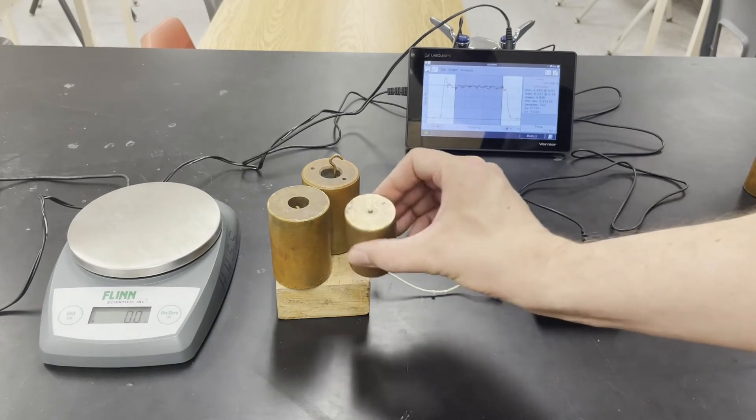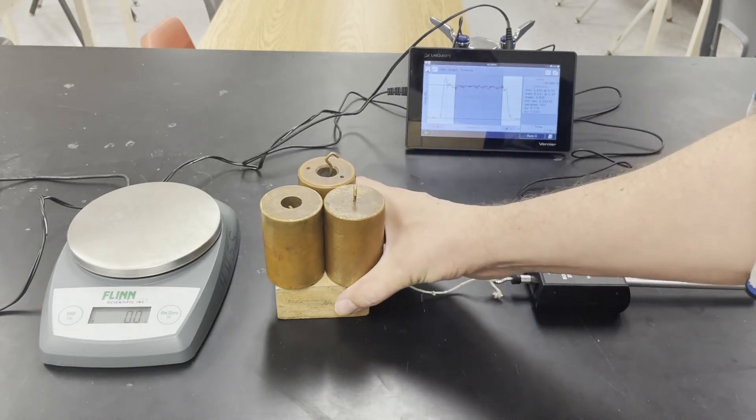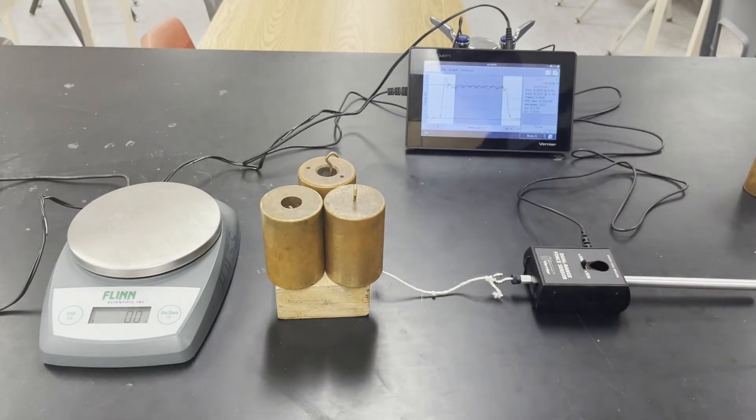Alright, one last time. We're going to remove that 500 gram and add another kilogram. So we now got 3 kilograms of mass in addition to the block.